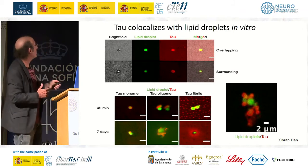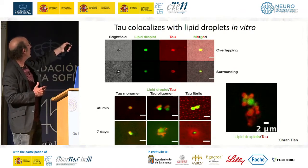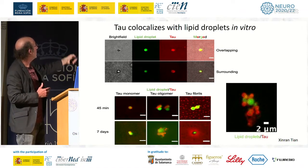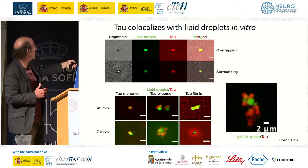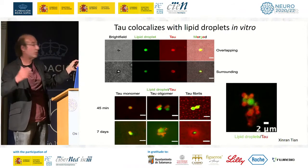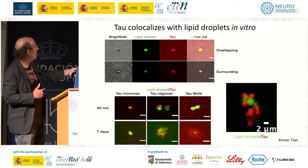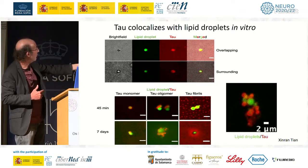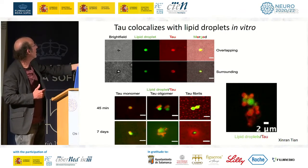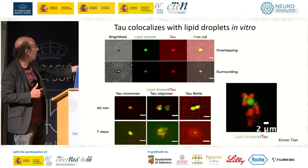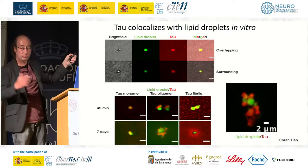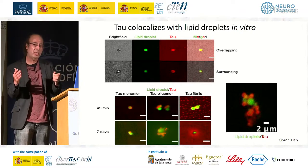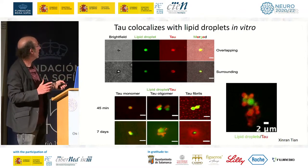Here are images created by combining tau with lipid droplets. When you take these isolated lipid droplets in green and purified tau, the structures begin to overlap. Here they are overlapping at 45 minutes and at seven days. If instead of tau monomers we use tau oligomers, we also get an association, and even with fibrils there is some degree of association. Here in this blown-up image, the lipid droplet in green is surrounded by tau filaments. In some cases — more so with monomers — tau actually enters the lipid droplet.